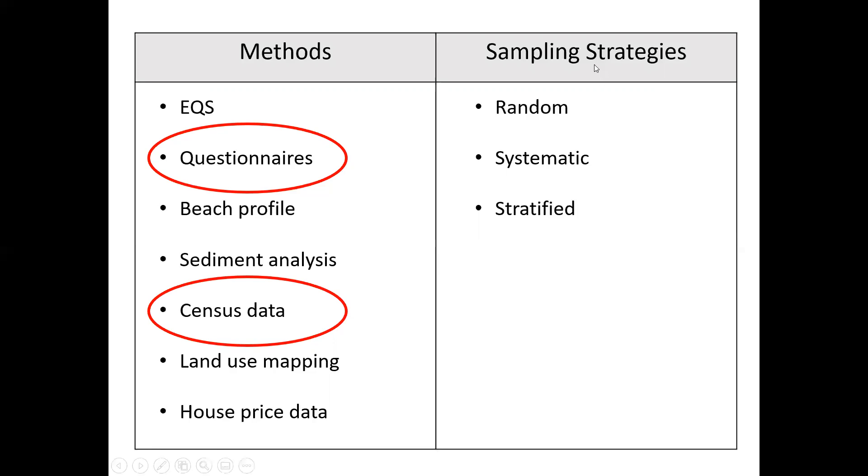Now sampling strategy is how we decide which data to pick. It's quite different from the method. It's the way we decide which data to pick. So for example, with your questionnaires, how are you going to decide who you speak to? Or for example, with the beach profile, how are you going to know where to go on the beach? And that's where these three come into play.